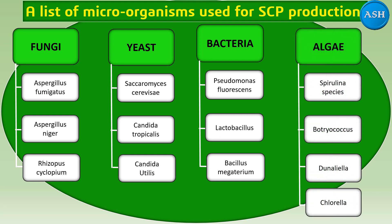Now we will go with the main part. The main topic we are dealing with is algae. Different types of algae used for SCP include Spirulina species, Botryococcus, Dunaliella, and Chlorella. These different types of algae are all used for SCP production. But more generally, Spirulina species, as it contains a higher concentration of protein, is most commonly used for SCP production.